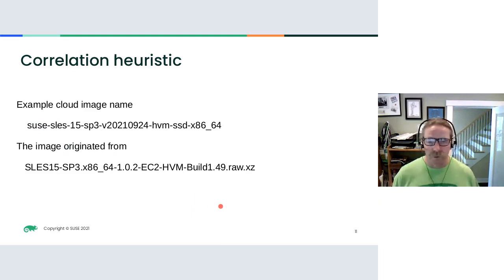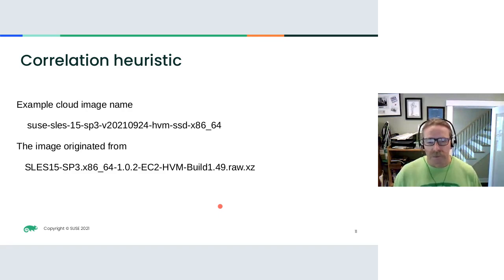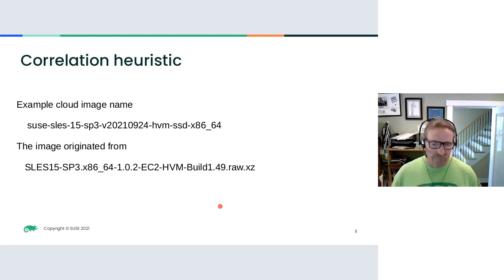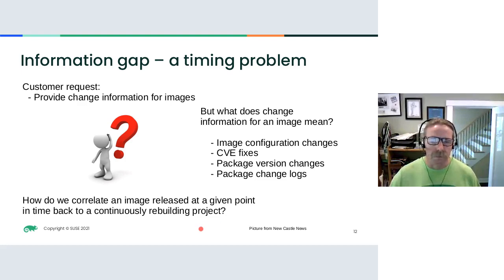In addition, we have a core correlation heuristic problem. For example, here is a name as it appears in AWS — the image is named something like SUSE SLES 15 SP3 with a date code. And that image came from the name you see below, which is the way it pops out of the build service. So these things also have to be correlated, and doing that manually again just increases mental overhead and errors. That's where the automation also helps.